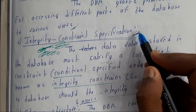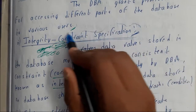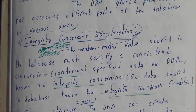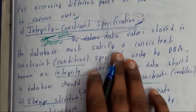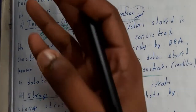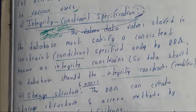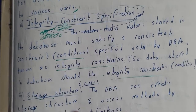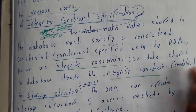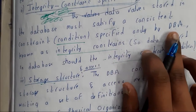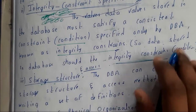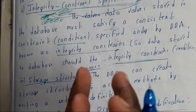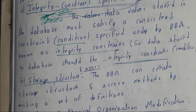The DBA is also responsible for specifying integrity constraints. If we have all the access rights and permissions, we can also be the database administrator. The data values stored in the database must satisfy certain constraints — for example, primary key and unique constraints. These are specified by the database administrator as integrity constraints. For instance, if you are entering a name, the first letter should be capital; if you enter a small letter it will not be accepted.